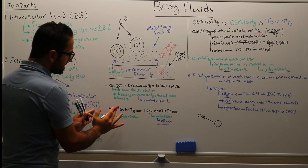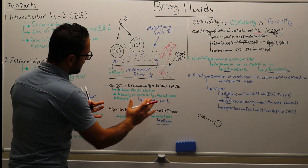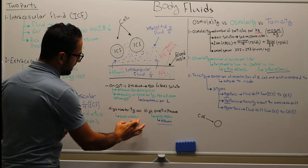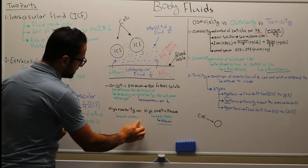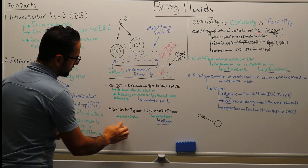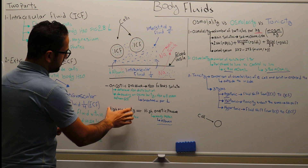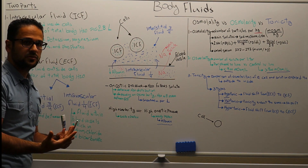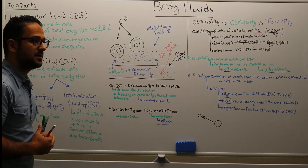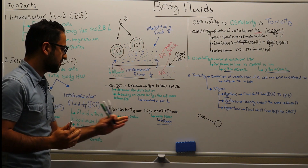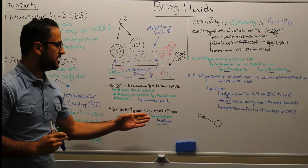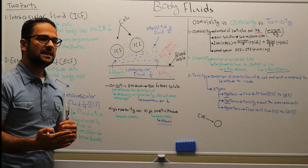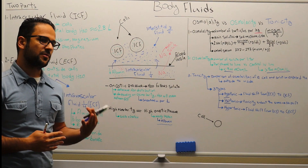The difference between osmolarity and oncotic pressure is that osmolarity is composed of two parts: the first part is solutes and the second part is protein. In comparison, oncotic pressure is mainly composed of protein, and the main protein in oncotic pressure is albumin.